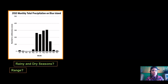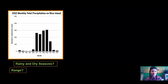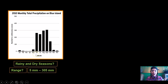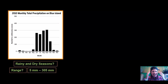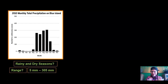Now let's figure out the range — the piece of data that tells us what the lowest month is and what the highest month is. I thought the lowest month was March and April at about five millimeters of rain, and the highest month was September at about 305 millimeters. You may wonder how I know exactly — I estimated. I looked at the bar and figured out what it looks about like, which is a really good skill when reading a graph.